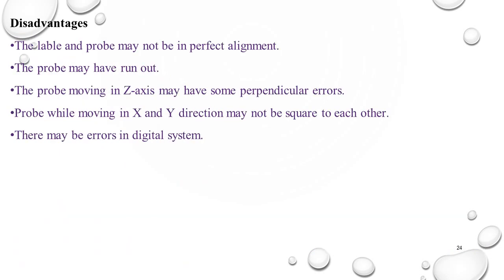Disadvantages of CMM: the table and probe may not be in perfect alignment; the probe may have runout — nowadays ruby-tipped probes are used to avoid wear and tear; the probe moving along the Z-axis may have perpendicular errors; when moving in X and Y, reactions may not be square to each other; and there may be errors in the digital system.